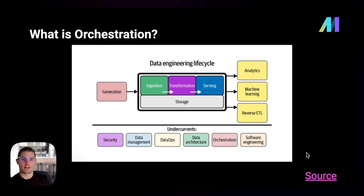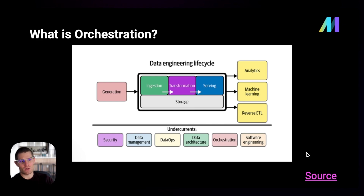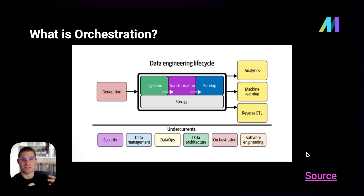There's a great graphic from the Fundamentals of Data Engineering — if you haven't read that book, I highly recommend it. Matt and Joe characterize the data engineering lifecycle through generation, storage, and other terms, but really you can think of the top half as just extract, transform, load. Orchestration is one of the undercurrents, meaning it happens throughout the entire lifecycle of data engineering. It's key to the entire process of building data pipelines.